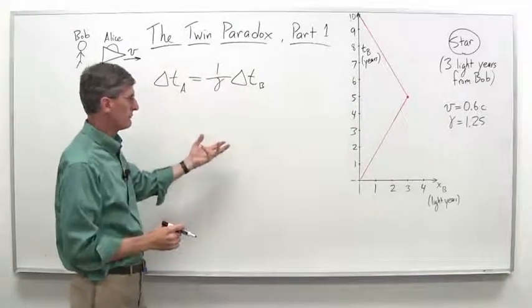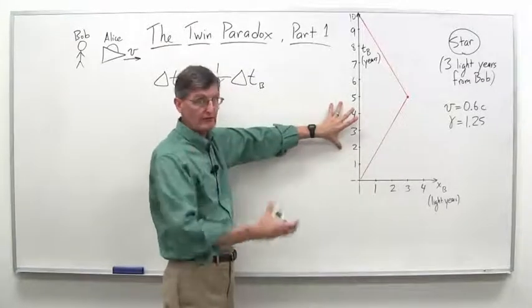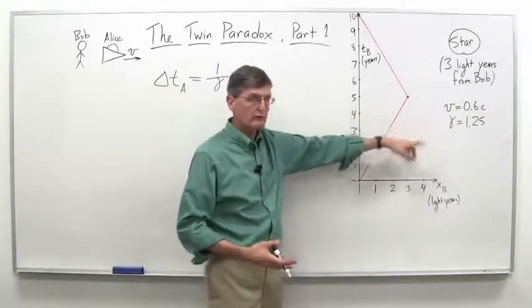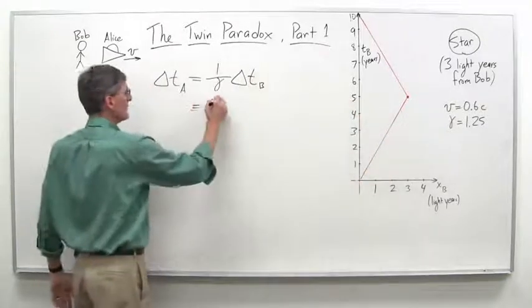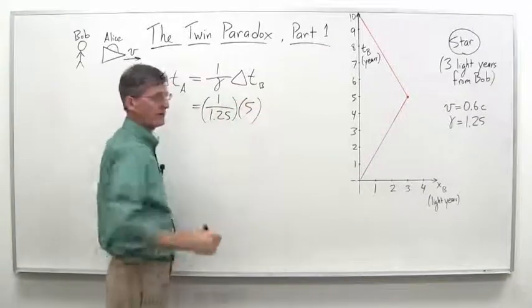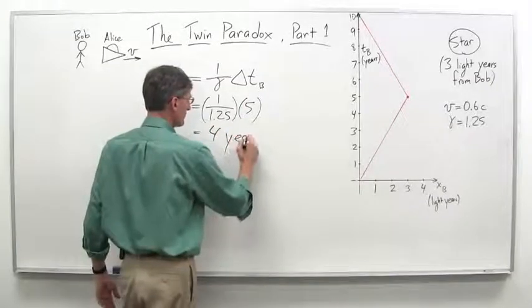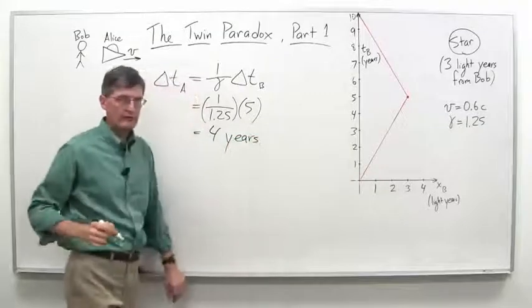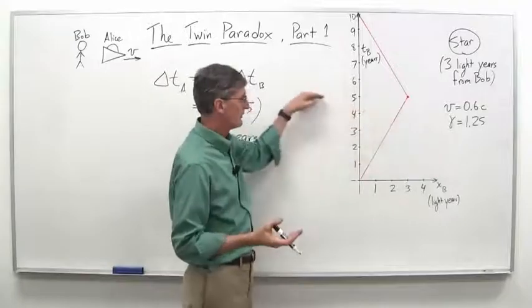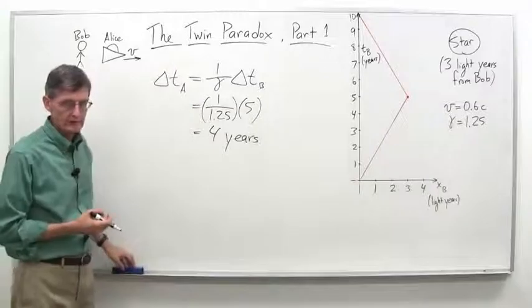We'll call it delta T sub A at a certain period of time in Alice's clocks. It's going to be one over gamma delta T sub B because Bob is observing Alice moving. And so if you do the math, which really isn't too difficult here because if Bob sees five years for Alice to get out there, well, five years divided by 1.25, so one over 1.25 times five years gives you four years. So he sees Alice's clocks tick off four years. When she gets there, they take a picture. His lattice of clocks will read five years. Her clock at that point will read four years.